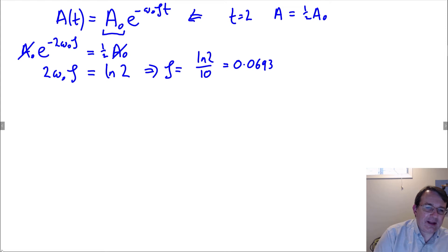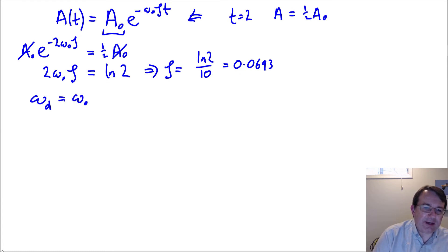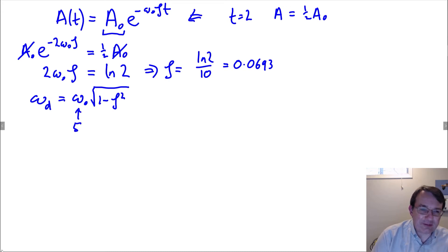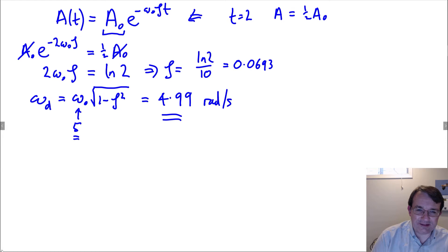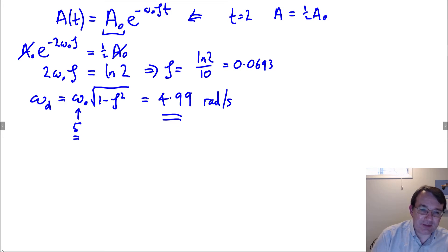Now that we have zeta, we can find the angular frequency of the damped oscillations: omega-naught times the square root of 1 minus zeta squared. With omega-naught equal to 5 and our value of zeta, we find the damped angular frequency is 4.99 radians per second to three significant figures — very close to the natural frequency of 5 radians per second, but not quite. To four significant figures it's 4.987, so it would be wrong to simply answer 5.